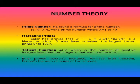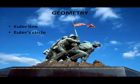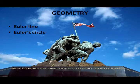Euler's interest in number theory can be traced to the influence of Christian Goldbach, his friend at St. Petersburg Academy. He proved that the sum of the reciprocals of the primes diverges. Euler also proved Newton's identities, Fermat's Little Theorem, Fermat's theorem on sums of two squares. In geometry, he identified two remarkable concepts: the Euler line and the Euler circle.